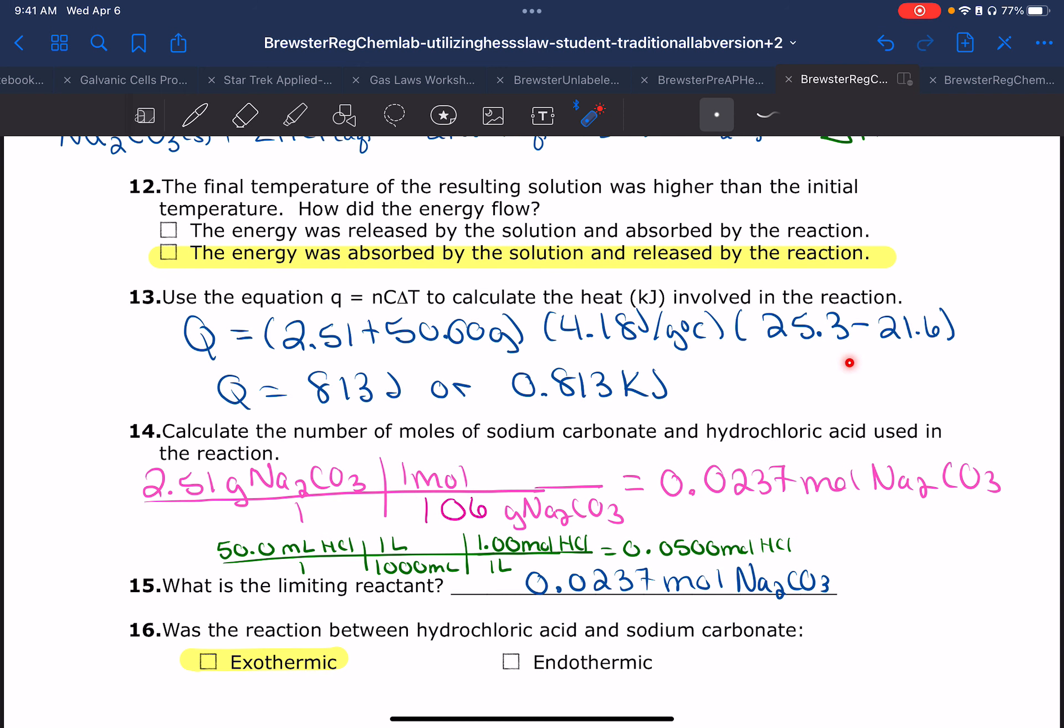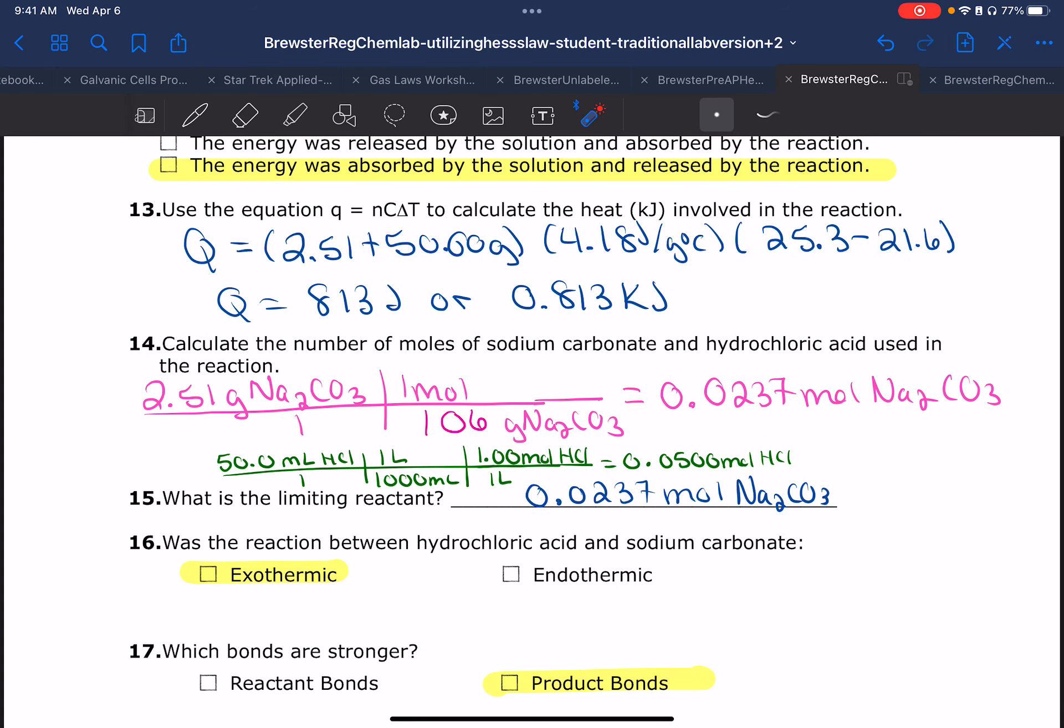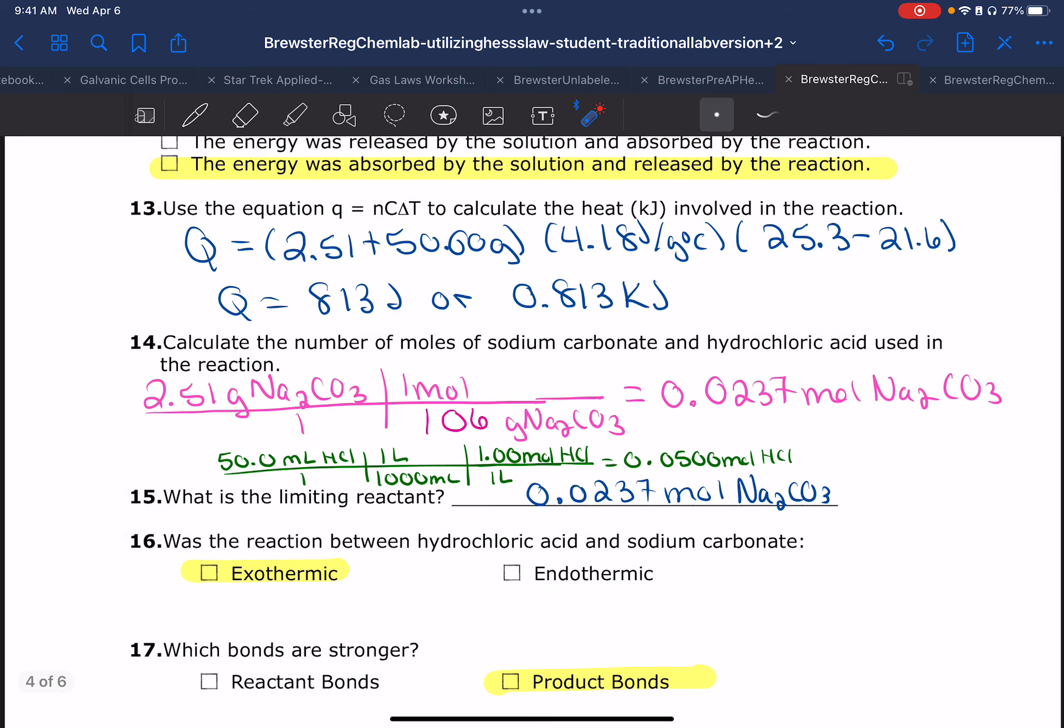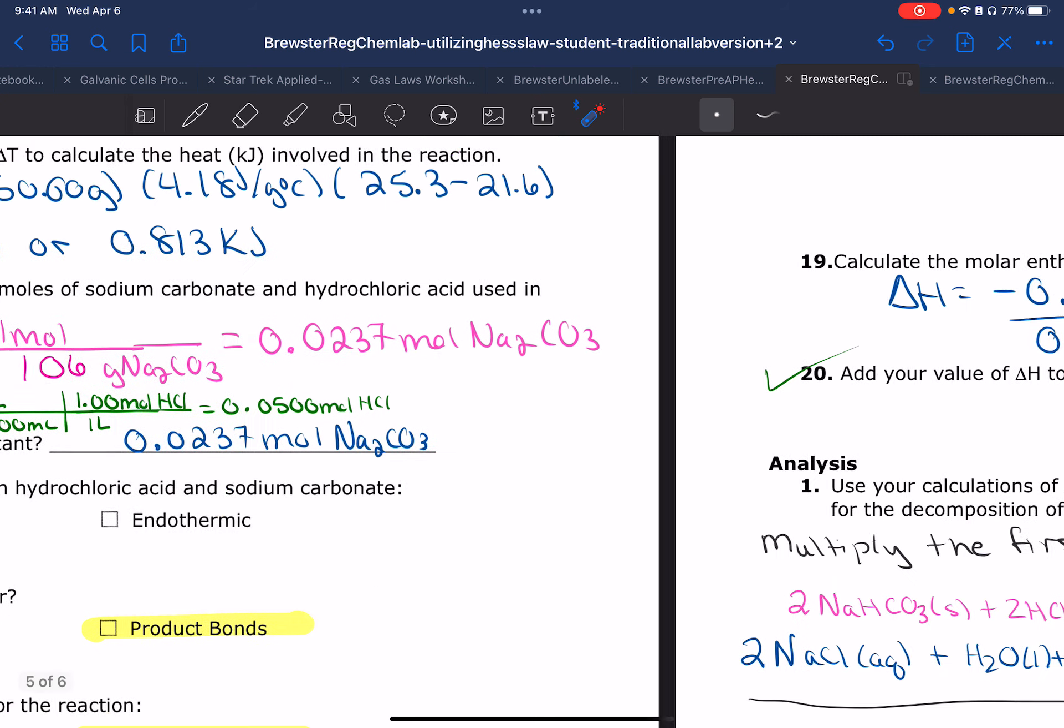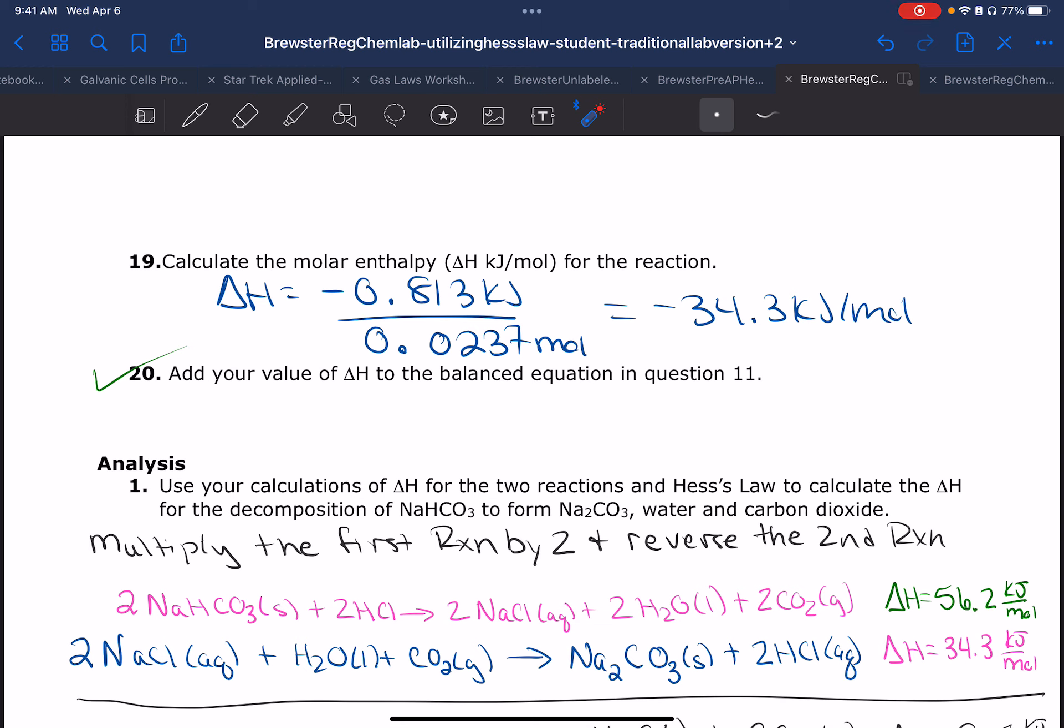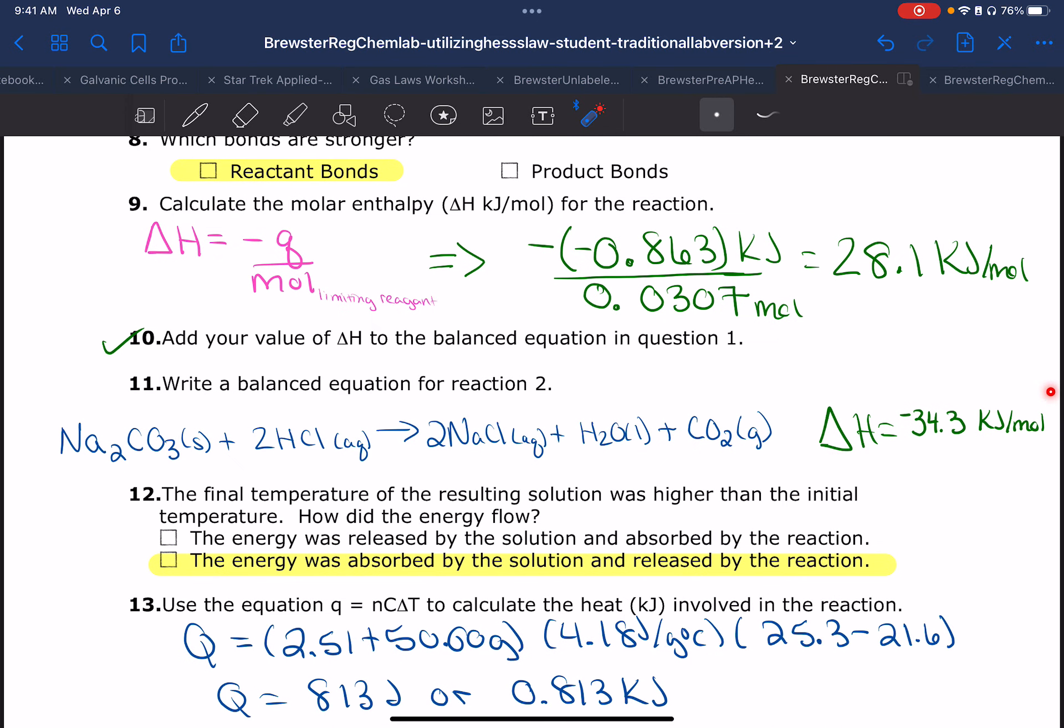And since our temperature went up, hopefully you said it was an exothermic reaction. If it's an exothermic reaction, that means that my product bonds will be stronger, and since it's an exothermic reaction, my delta H will be negative. Then we're going to figure out our molar enthalpy. We're going to take our negative 0.813 kilojoules and divide by the moles of the substance we have, and we're going to get this number here: negative 34.3. We're going to add that number onto our equation.